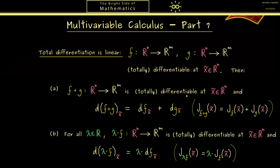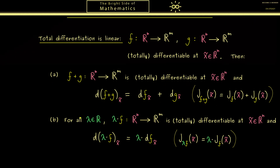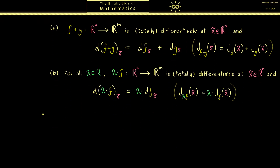These two rules don't change when we go from calculus to multivariable calculus, and the proof works exactly the same. Therefore it will be more interesting to look at the generalization of another rule: the popular chain rule.